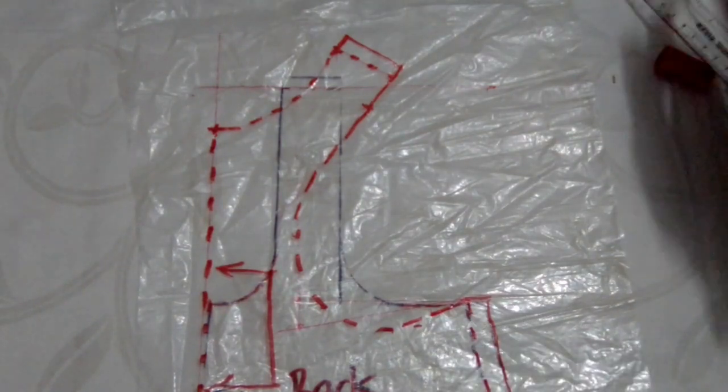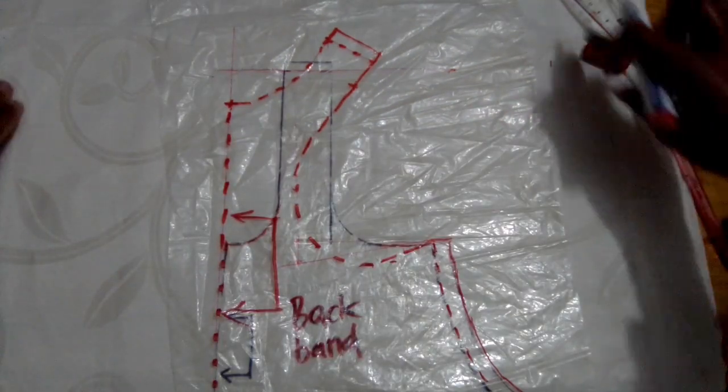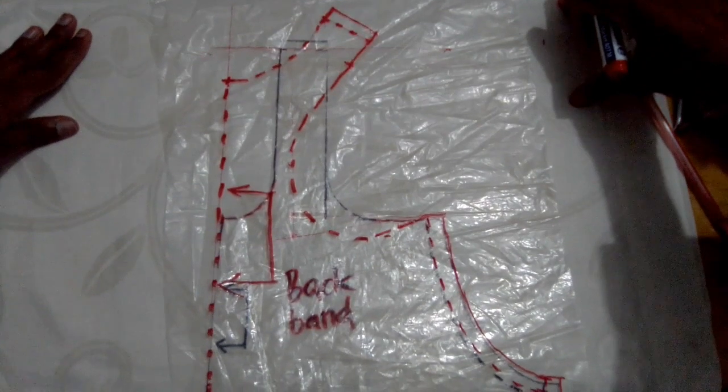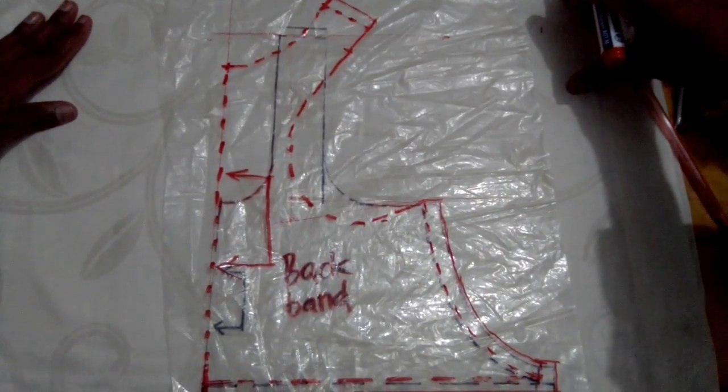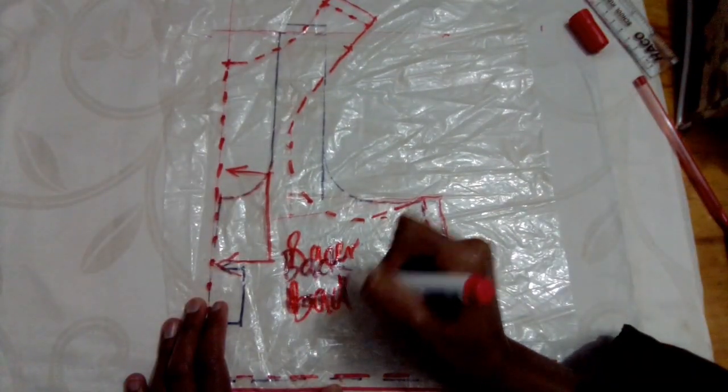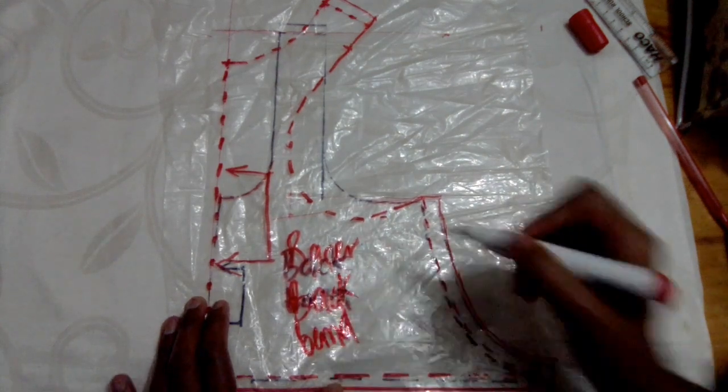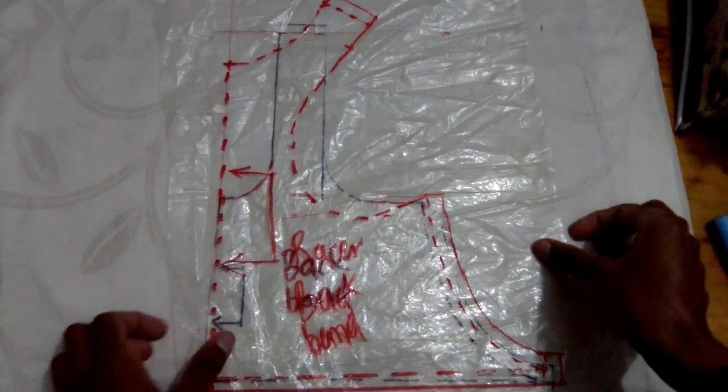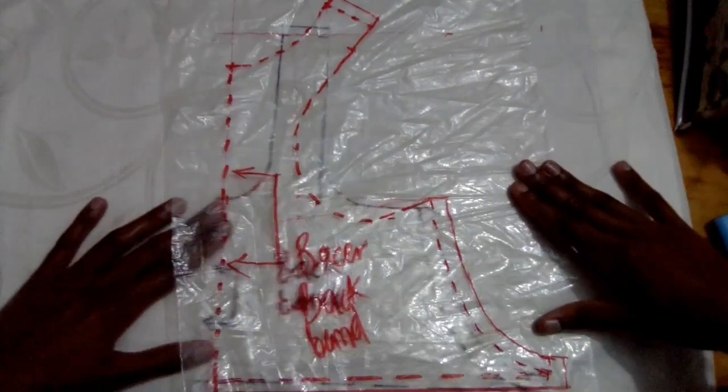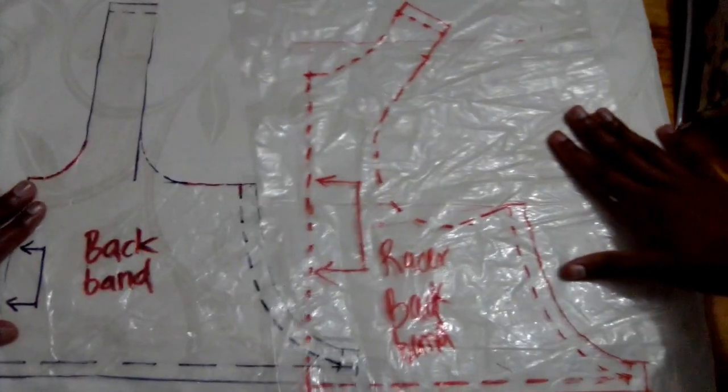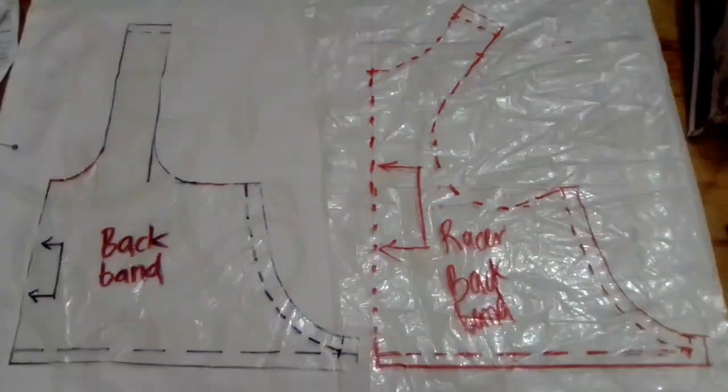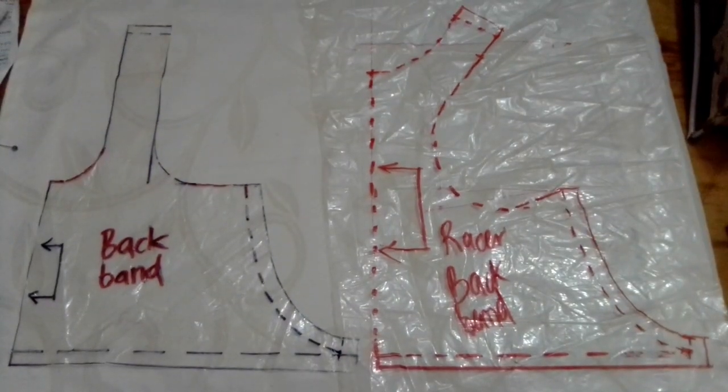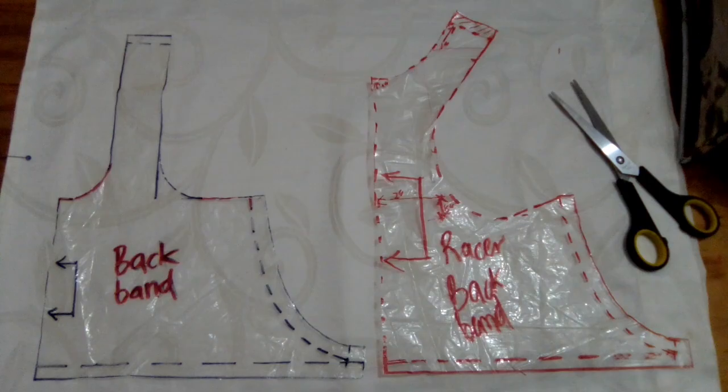And that's essentially how to create a racer back backband from your regular backband. Make sure you label the arrow that says 'place on fold.' I didn't add seam allowances at the neckline or at the shoulders because I'm going to use fold over elastic at the neckline and the shoulder.